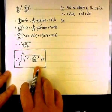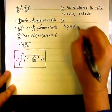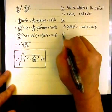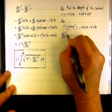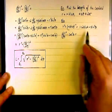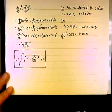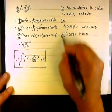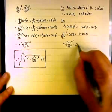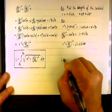Let's find r squared and dr/d theta squared. r squared is simply (1 plus sine theta) squared, or 1 plus 2 sine theta plus sine squared theta. dr/d theta is cosine, so (dr/d theta) squared is cosine squared, which we rewrite as 1 minus sine squared. Adding these two together, r squared plus (dr/d theta) squared equals 2 plus 2 sine theta.